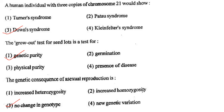Next one: The grow-out test for a seed lot is a test to determine option 1, genetic purity; option 2, germination; option 3, physical purity; option 4, presence of disease. Answer is option 1: genetic purity.